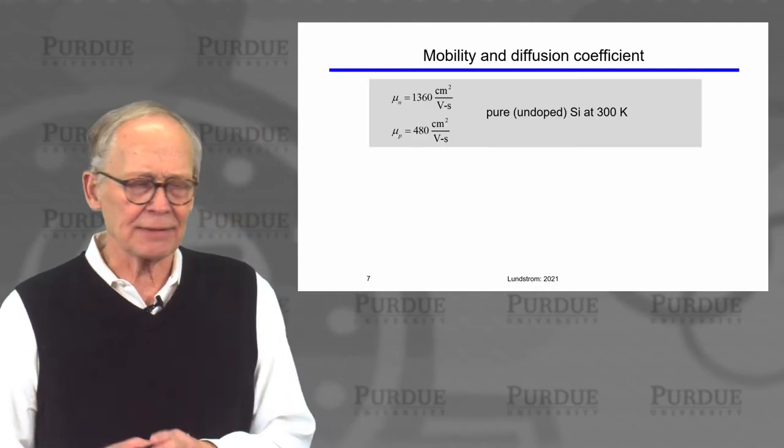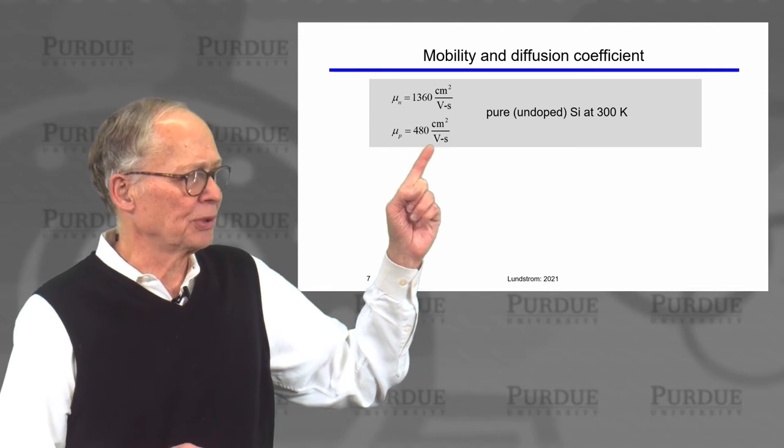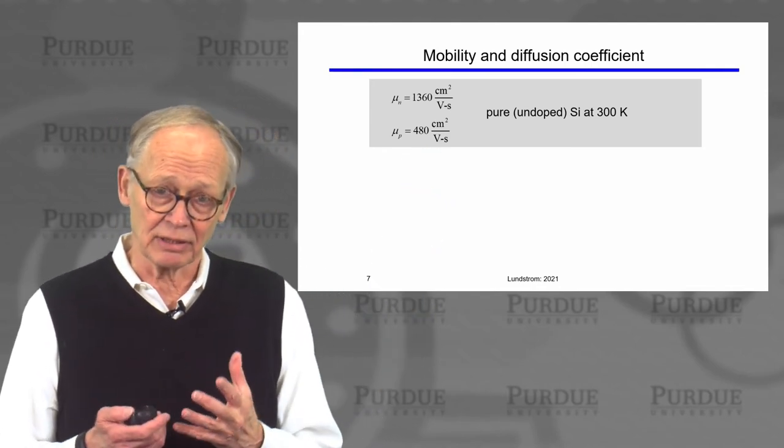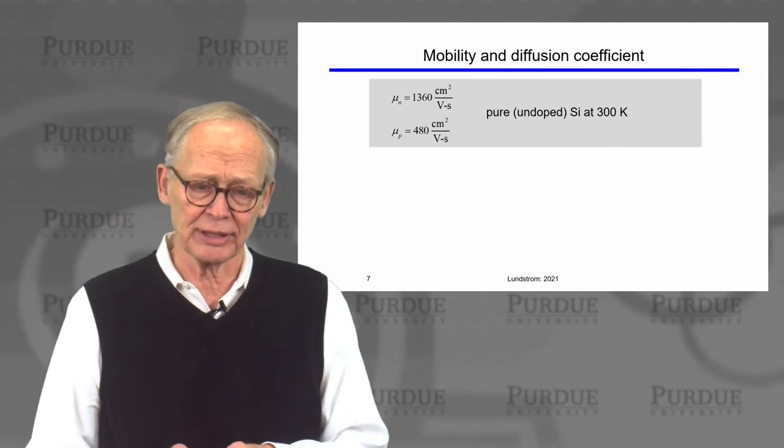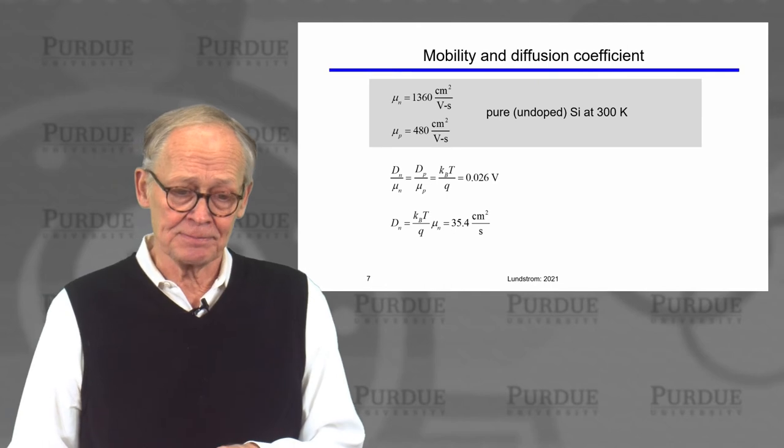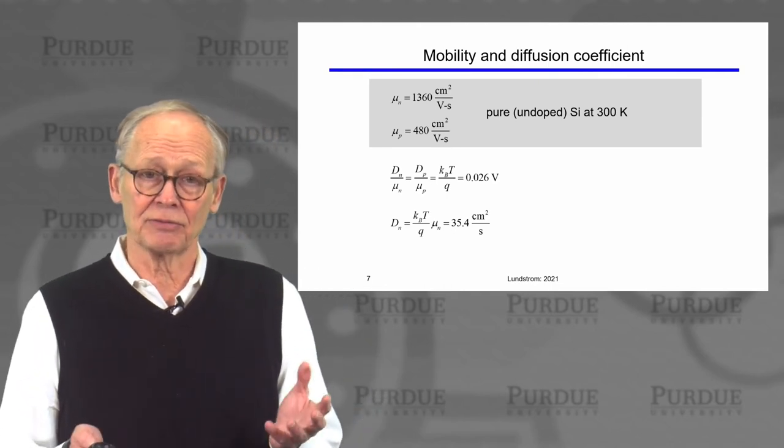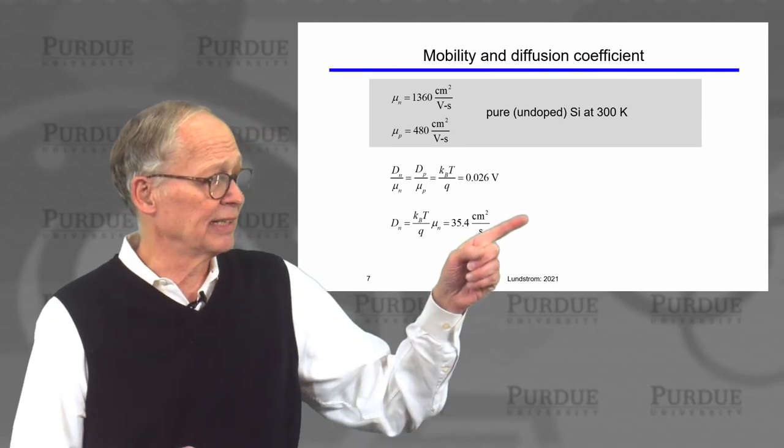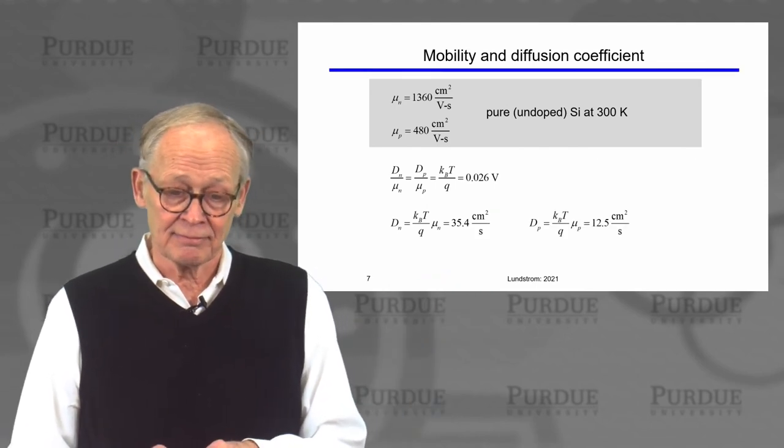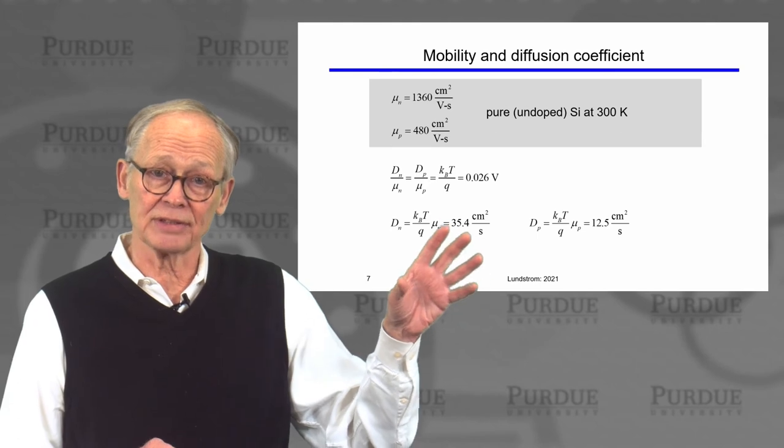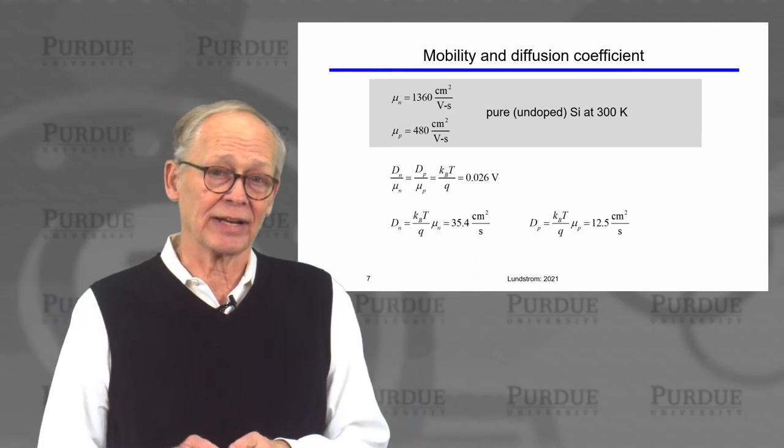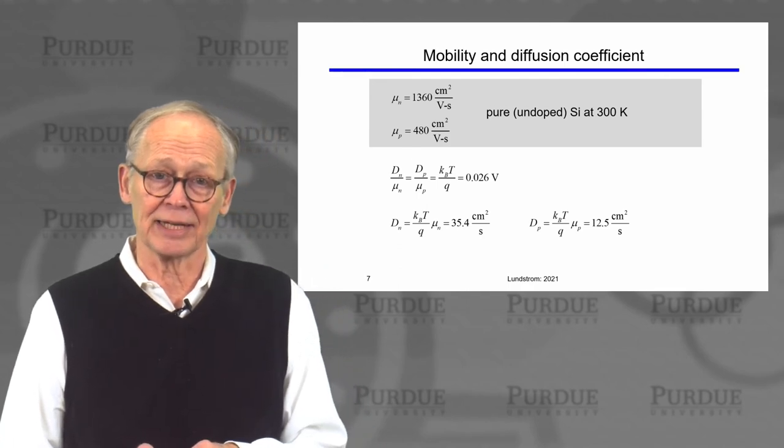So let's do that. Let's take some numbers for pure undoped silicon at room temperature. This is the electron mobility and the hole mobility. Let's invoke the Einstein relation at 300k, and let's compute the diffusion coefficient for electrons. We'll find that it's about 35 centimeters squared per second. The diffusion coefficient for holes is less because the mobility is less. It's about 12 and a half centimeters squared per second.